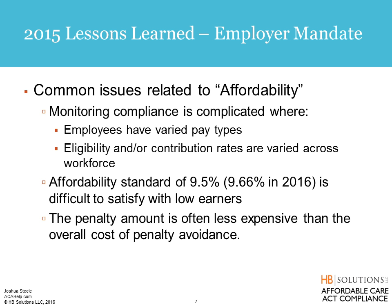Generally, that affordability standard is 9.5% — it's now 9.66% in 2016 — and it's difficult to satisfy with low-wage earners. I think generally employers put a little too much emphasis on affordability, because oftentimes the penalty amount is less expensive than actually providing affordable coverage. If you're subject to a penalty for not offering affordable coverage and that individual enrolls in exchange coverage and gets subsidized coverage, you're looking at roughly $3,000 per year per individual. On the flip side, in order to make that coverage affordable, most employers' premium contribution would be much higher than $3,000 per year — something to think about when making that cost-benefit analysis.